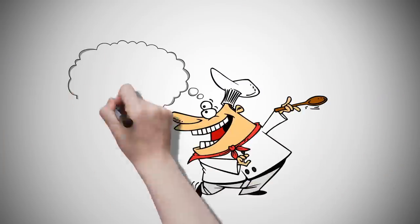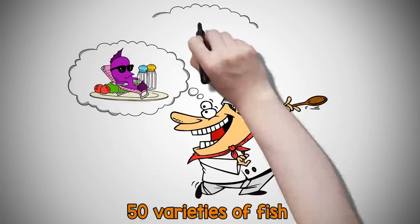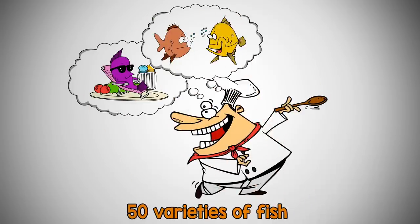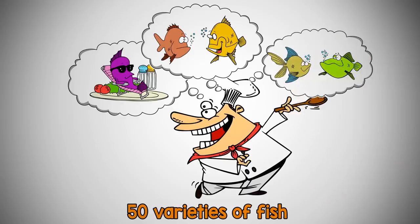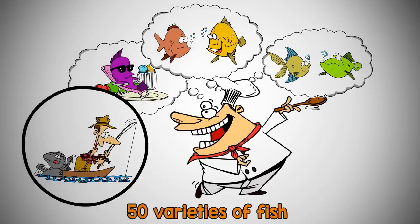Mesopotamian cuneiform tablets noted 50 varieties of fish eaten from seas, irrigation ditches, and rivers in the region. That really shows how fish was a major part of a Mesopotamian diet, and it reveals how fishing was one of the ways the ancient Mesopotamians adapted to their water-rich environment.